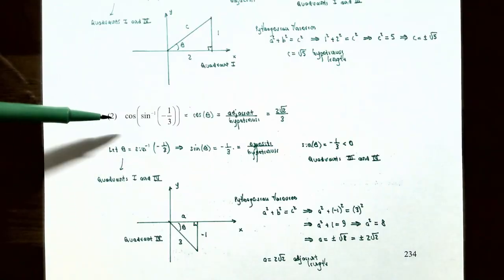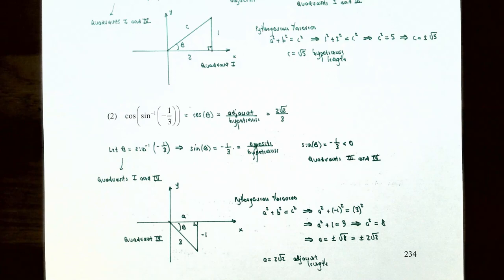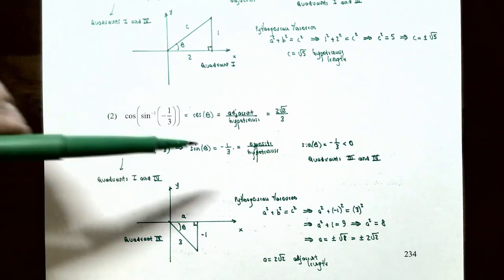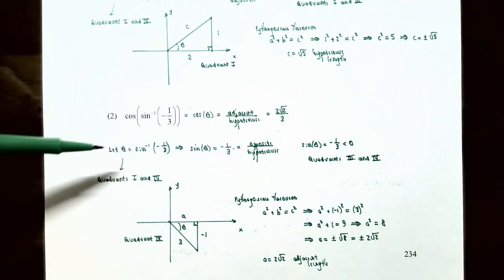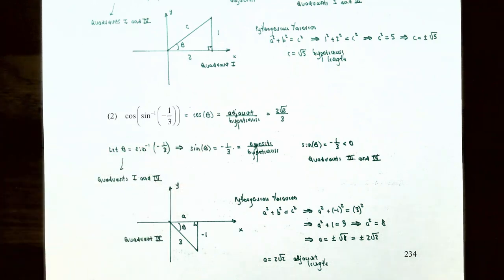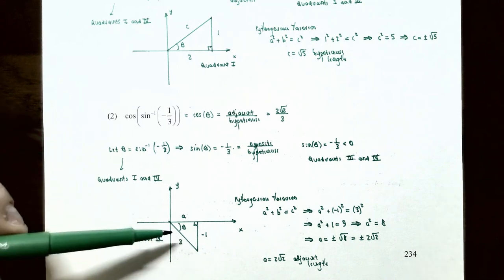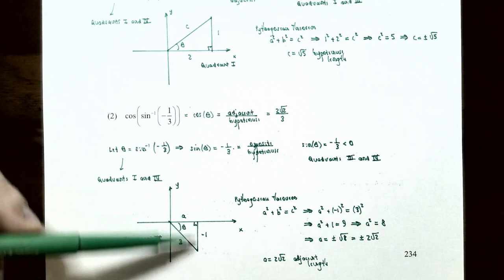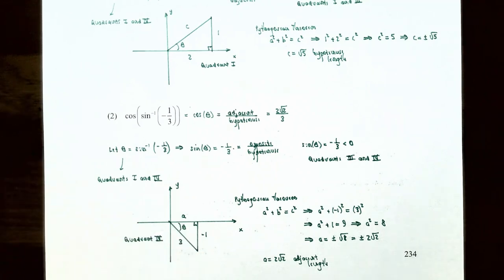Number two: find the value of cosine of inverse sine of negative one-third. The inverse sine of negative one-third represents an angle, so let theta equal inverse sine of negative one-third, meaning sine of theta equals negative one-third. The angle theta must be between negative pi over two and pi over two radians, including the endpoints. Since sine is negative, we draw the triangle in quadrant four. The opposite side is negative one and the hypotenuse is three.